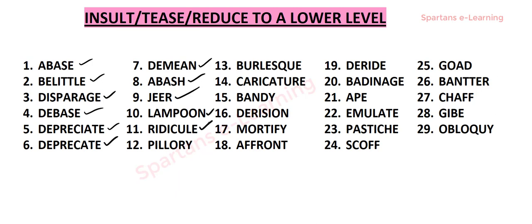Our next word is ridicule. Ridicule can be a noun as well as a verb. Ridicule means unkind laughter or remarks that are intended to make someone or something seem stupid. Example: the ridicule of his peers. Another example: he had become an object of ridicule among the other teachers. So ridicule means to make someone seem foolish.